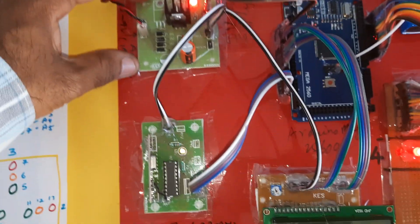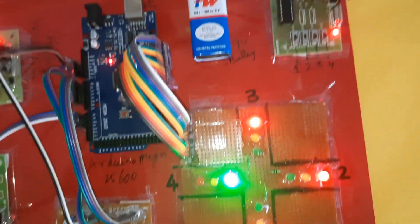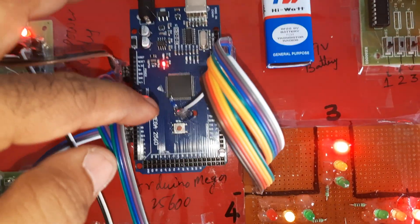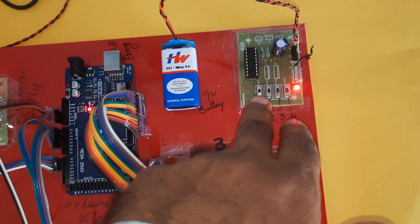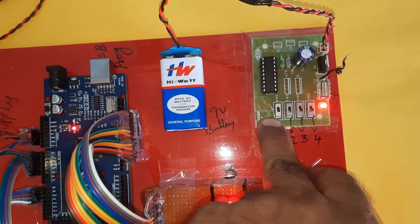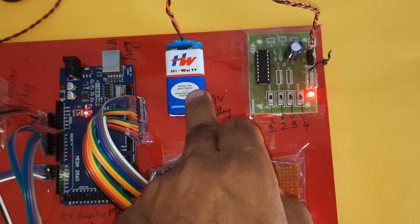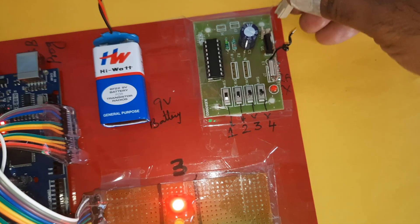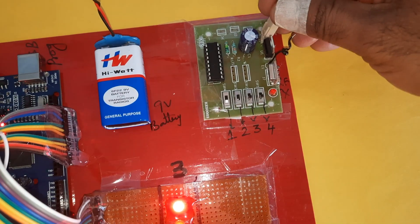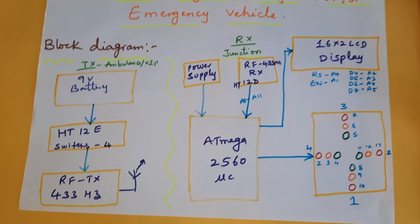Summary of components: power supply board, RF receiver module, 16x2 LCD display, Arduino Mega 2560 board, traffic lane junction, and RF 433 MHz transmitter module with battery. This is our block diagram. Thank you.